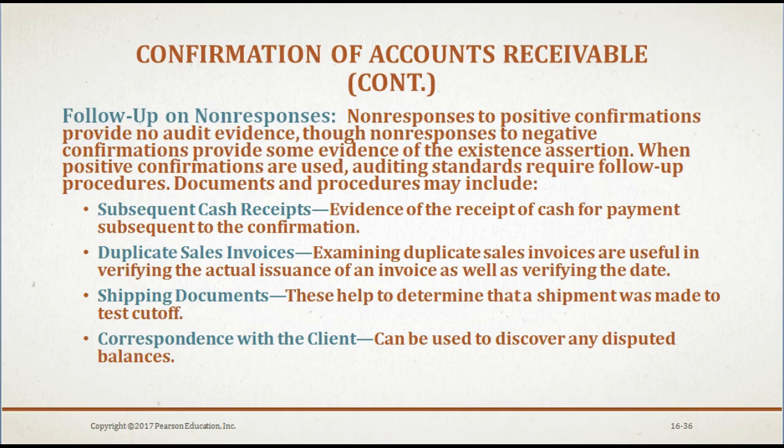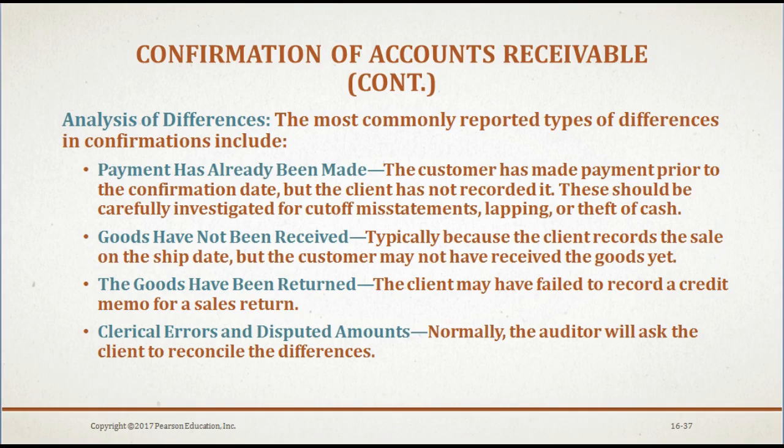The most commonly reported types of confirmation differences include: payment already made by the customer prior to the confirmation date but not recorded by the client, which should be investigated for cutoff misstatements, lapping, or theft of cash; goods not yet received by the customer, typically because the client records the sale on the ship date; goods returned by the customer where the client failed to record a credit memo; and clerical errors and disputed amounts. In these cases, the auditor will ask the client to reconcile the differences.